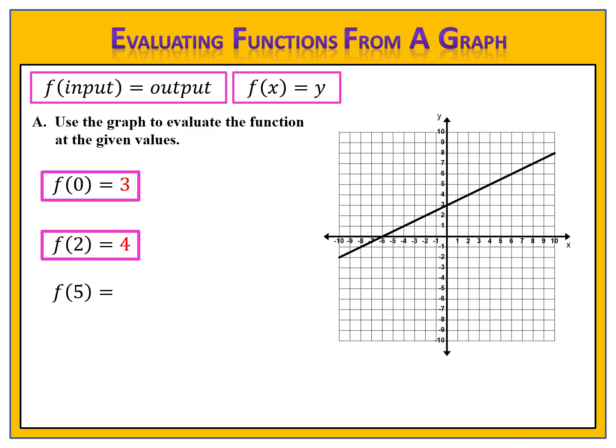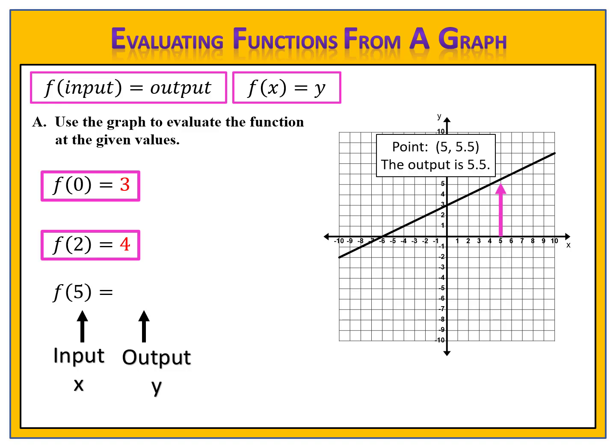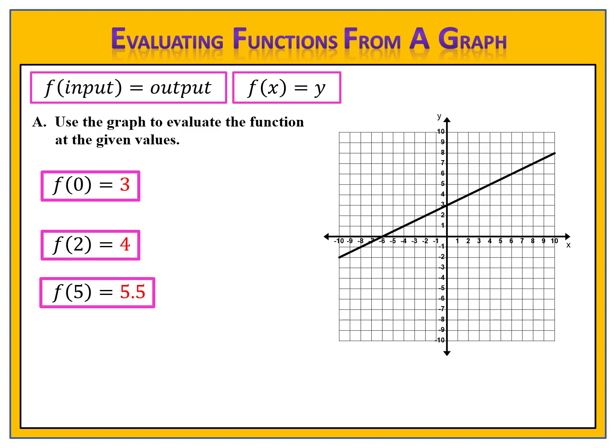Here's another example: f of 5. Take a moment and see if you can evaluate the function f of 5 using the graph — please pause the video here. F of 5 equals something. F of input equals output, so 5 is the input and we want to find the output. We go along the x-axis where the input is 5, go up to the graph, and find the point (5, 5.5). The output is 5.5, so f of 5 equals 5.5.